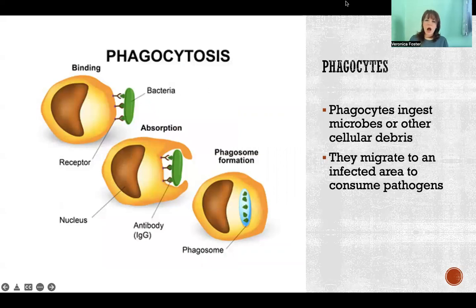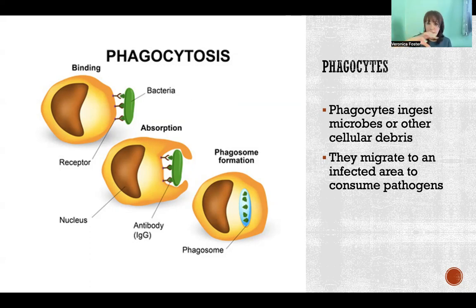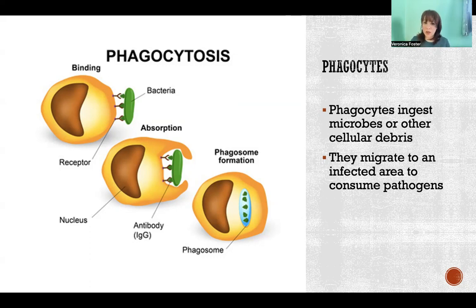Phagocytes are like big Pac-Man cells. They're just these big cells that go around gobbling stuff up, digesting it and doing away with it. In some cases they will actually ingest microbes and pathogens and kill and destroy them. But they also will kill our dead cells — cells that have been killed by injury, damage, or by fighting infection — and destroy that old cellular debris and clean it up.